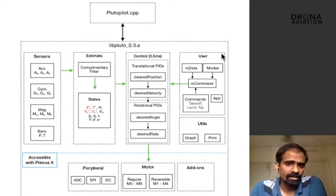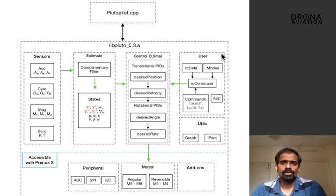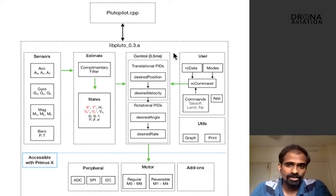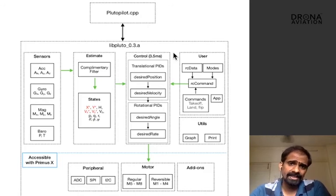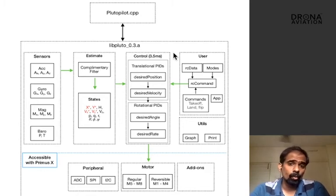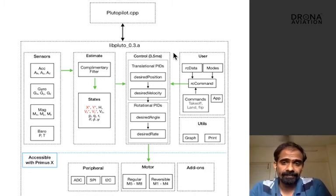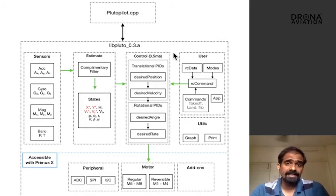Now we have a reasonable estimate of what the drone is doing and we also have the commands that the user wants. Using those two modules, the next block is driven. The next block is called the control block. This is the most important block in the firmware and is responsible for all the stabilization of the drone. This block has many PIDs inside it. Using the estimate block and the user block, this block determines using PID algorithms what are the necessary outputs that the motors should be driven to achieve the desired user command. If you want to access the control block, we can use #include control.h inside the Plutopilot.cpp file to access all the various control functions.